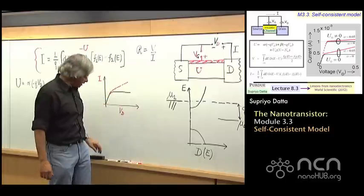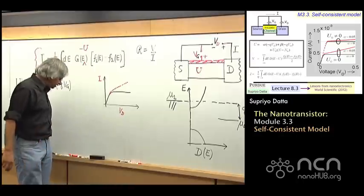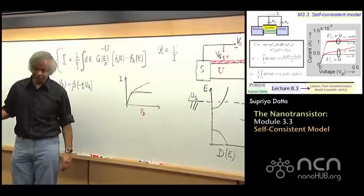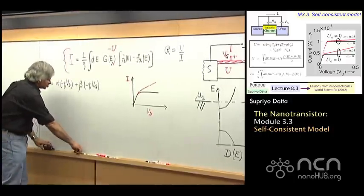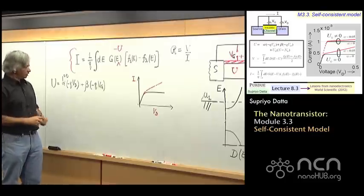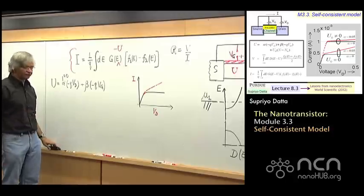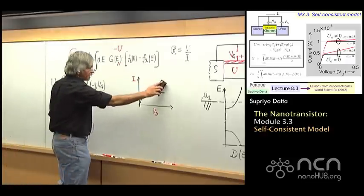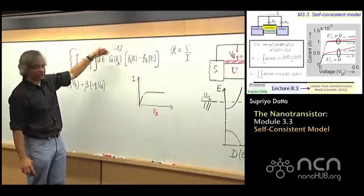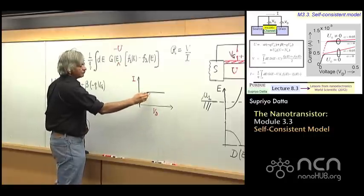The main point I wanted to make is this drain-induced lowering is something that needs to be taken into account. Now to complete the story, for the moment let's assume we have managed to build a perfect transistor with alpha equal to zero. What that means is when we change the drain voltage, the potential in the channel is not affected at all. So in that case, if you use this model, U doesn't depend on the drain voltage, and so the current would saturate at some value as we discussed.